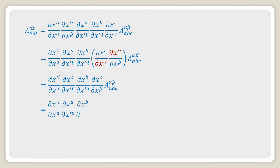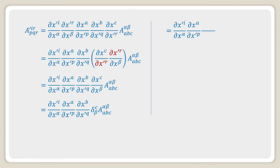In the next step, we can write (∂x^c / ∂x^β) as the Kronecker delta δ^c_β into a^αβ_abc. Again, in the next step, the multiplication of Kronecker delta δ^c_β into a^αβ_abc gives a^αc_abc, that is a^α_ab with α as the upper suffix and ab as the lower suffix.